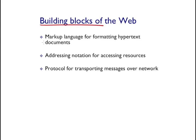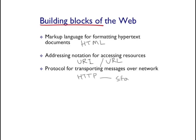The building blocks for the web include three components. First, we need a markup language for formatting hypertext documents — in this case, the Hypertext Markup Language, or HTML. Then we need an addressing mechanism to uniquely reference objects on the network, called the Uniform Resource Identifier or Uniform Resource Locator. Finally, we need a protocol to transport objects across the network — the application layer protocol that supports the web is the Hypertext Transfer Protocol, or HTTP, which is a simple request-response protocol that is stateless in nature.